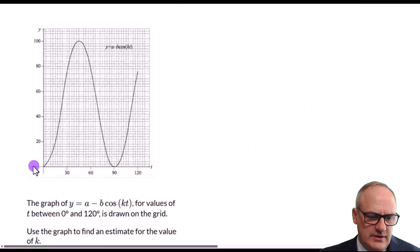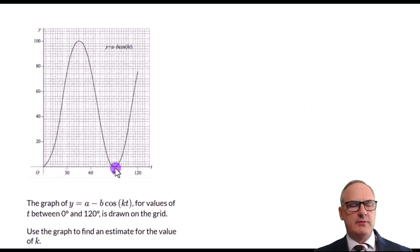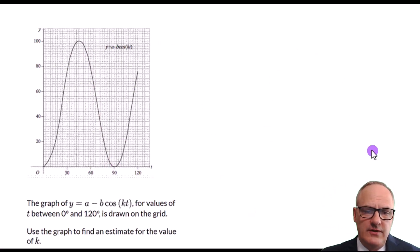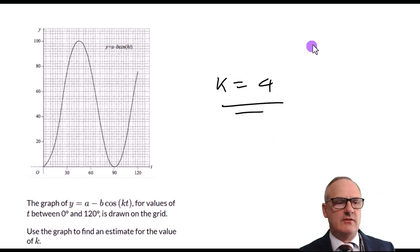So let's have a look at this one. So we've got a complete oscillation by 90, one complete one by 90. So by the time we get to 360, we're going to have another three oscillations. That'll be four in total. So our k must equal 4, because that is the number of oscillations we're going to get in by the time we get to 360.